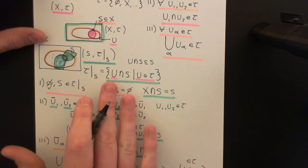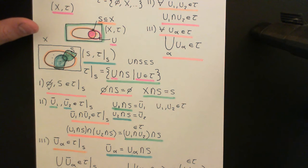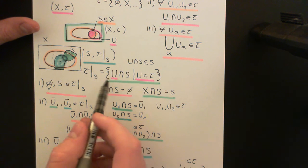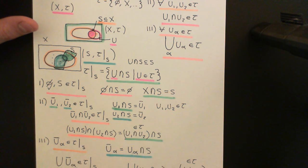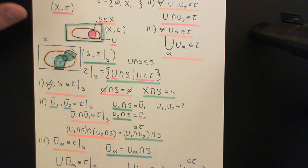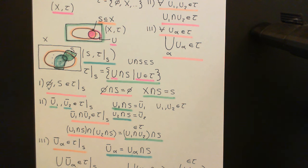This inherited topology just consists of all of the open sets from the larger topological space intersected with the subset capital S, so that they now become subsets of the set capital S. You just take the portions of the open sets from the larger topological space which are inside the subset capital S, and you call them your open sets in this smaller set capital S. That's what is meant by the restricted topology from the larger topological space down to the subset capital S.